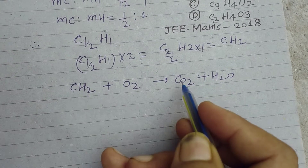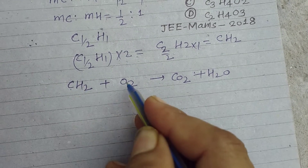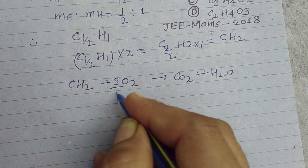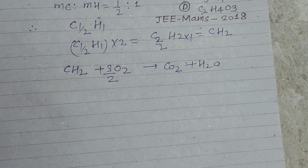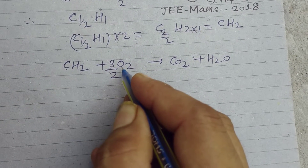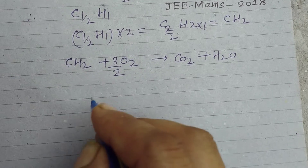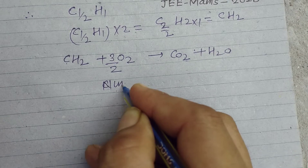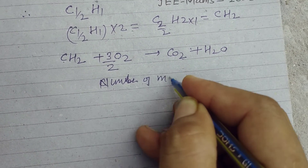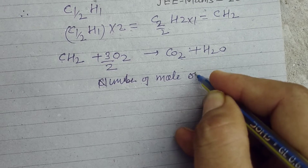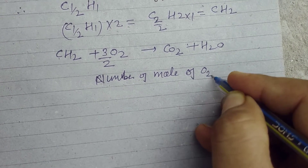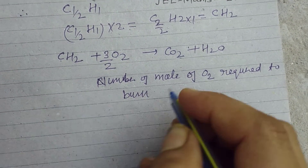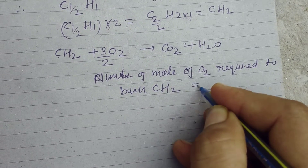Balancing the combustion equation for CH2, the coefficient for O2 works out to 3/2. So the number of moles of oxygen required to burn the compound is 3/2.